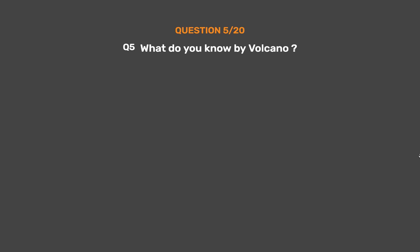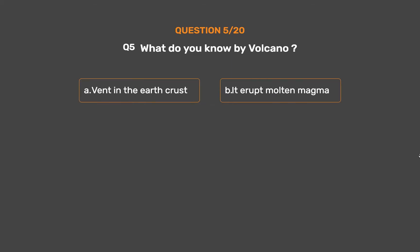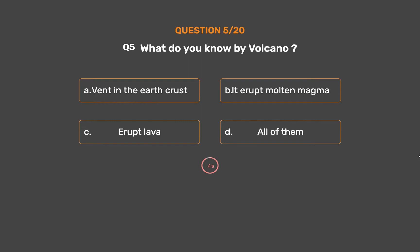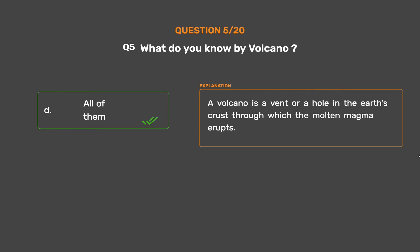Question No. 5: What do you know about a volcano? Option A: Vent in the earth's crust. Option B: It erupts molten magma. Option C: Erupt lava. Option D: All of them. The correct answer is Option D: All of them. A volcano is a vent or a hole in the earth's crust through which the molten magma erupts.